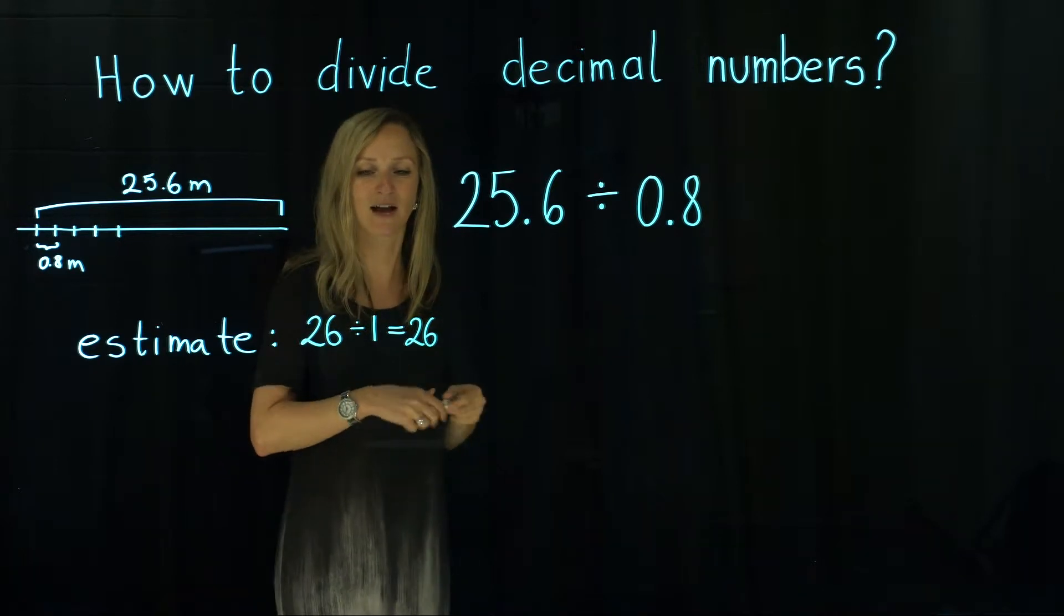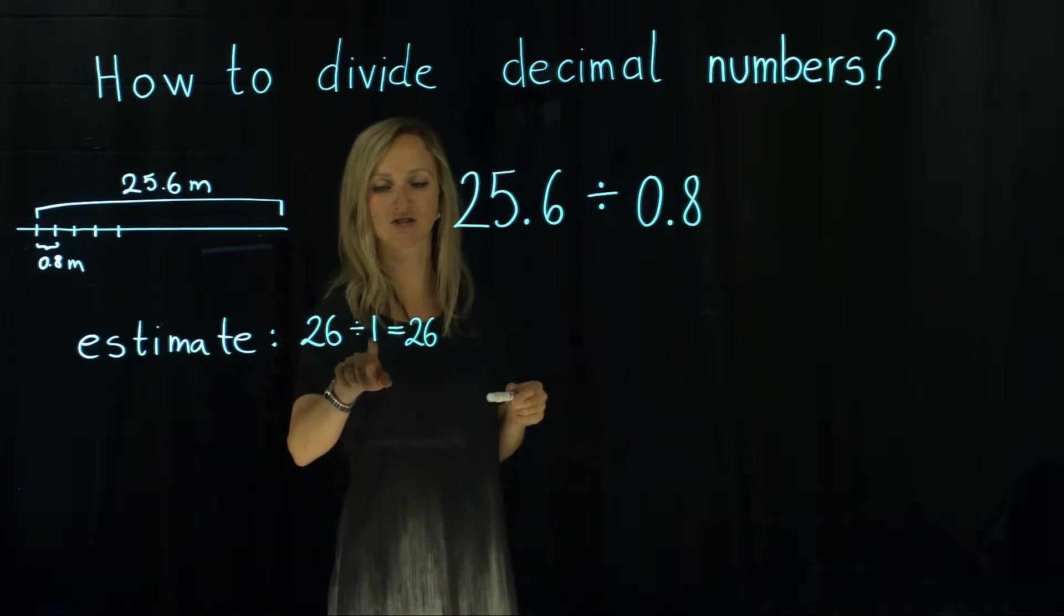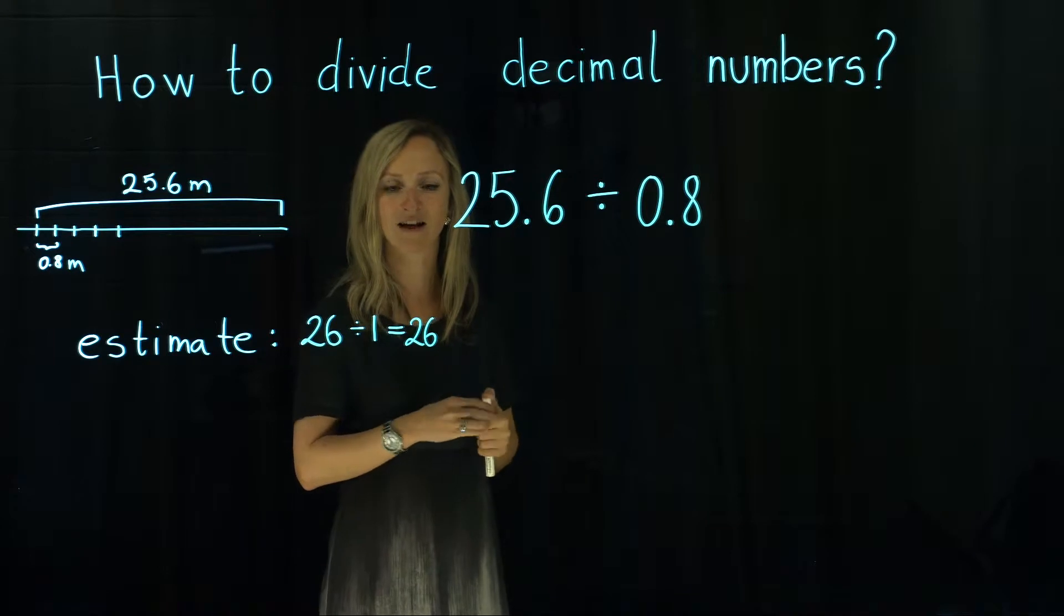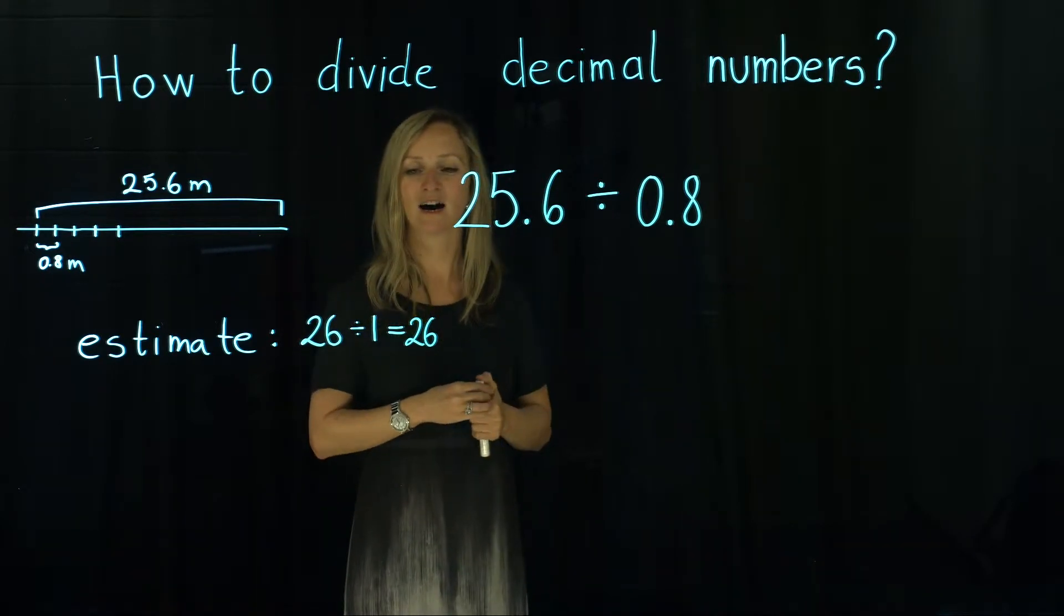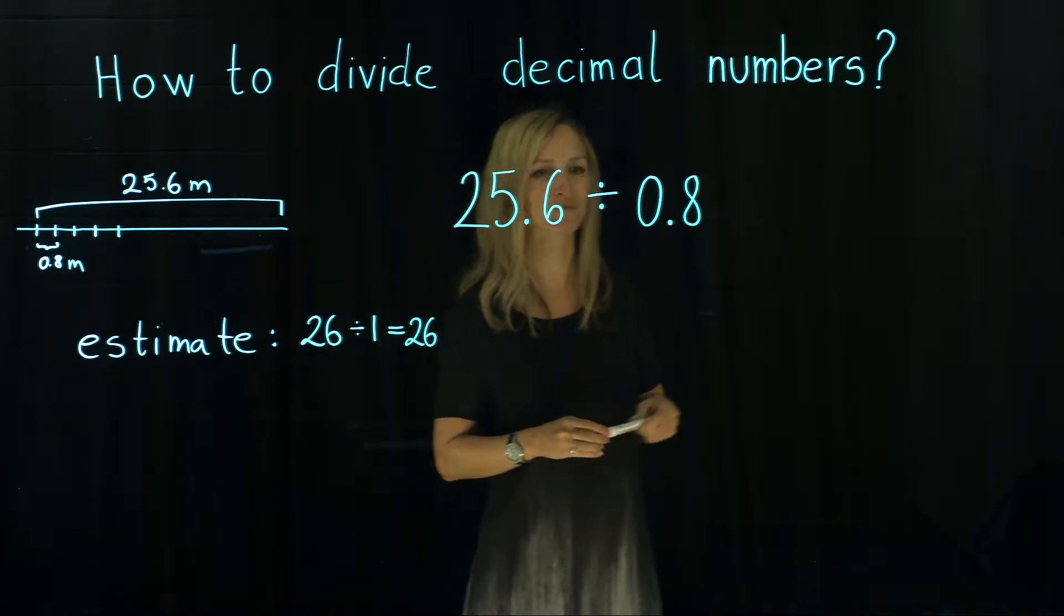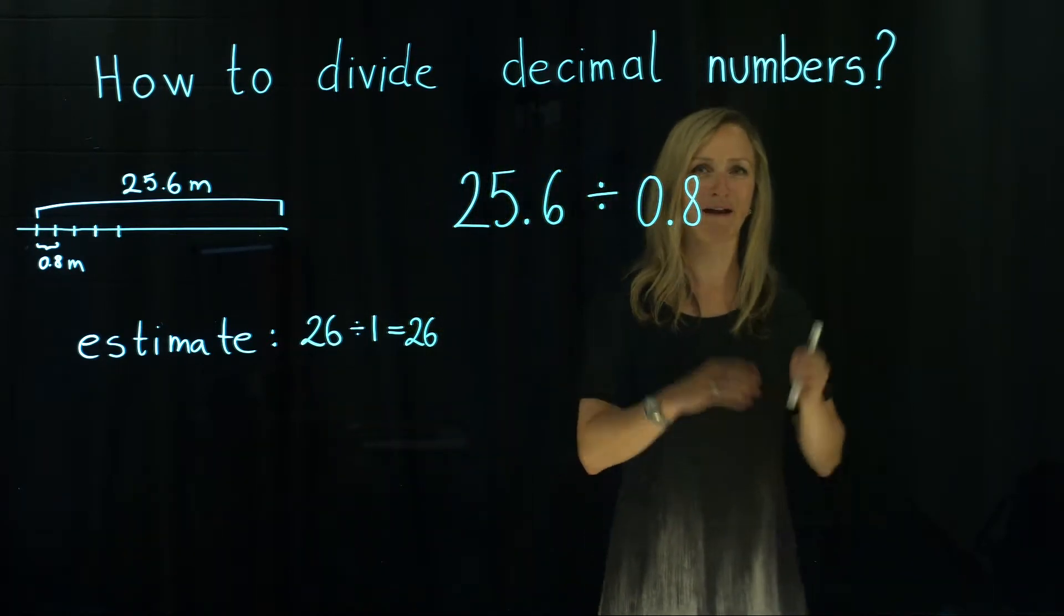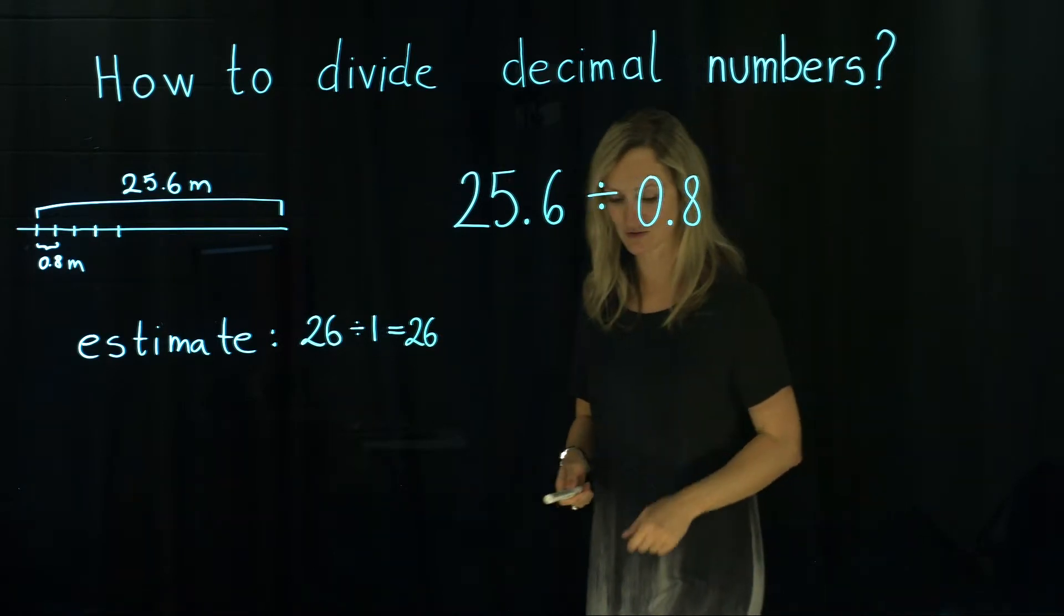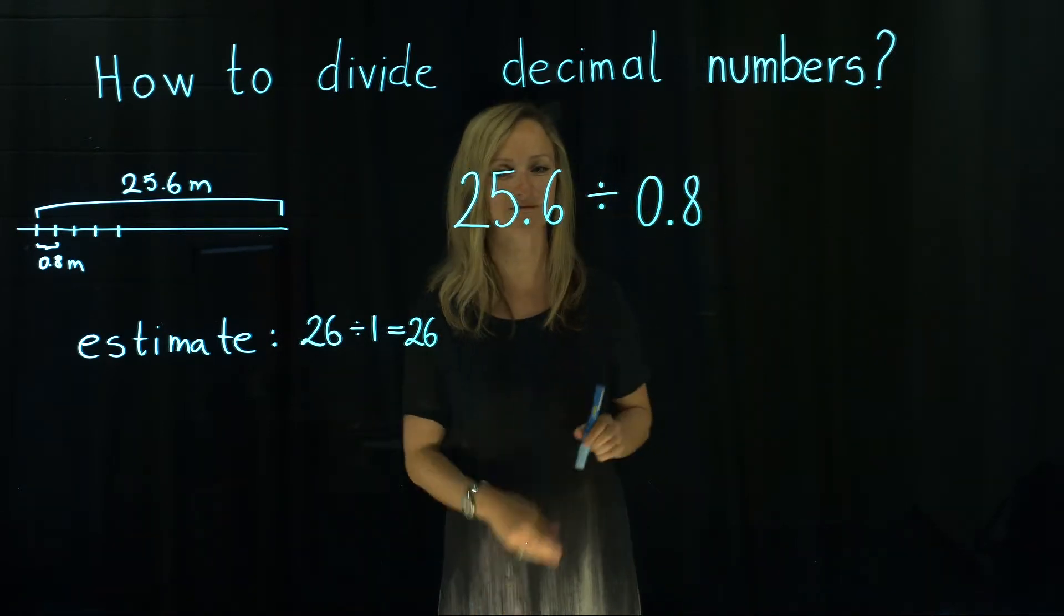So in case that we are having 26 meters of a hedge and between each plant we should be 1 meter, then we know for this whole hedge we need 26 plants. But of course we would like to know the exact answer. That's why we need to divide those two decimal numbers.